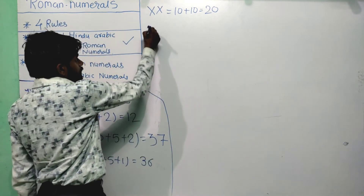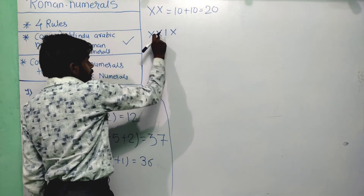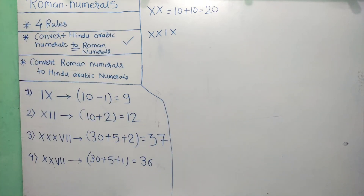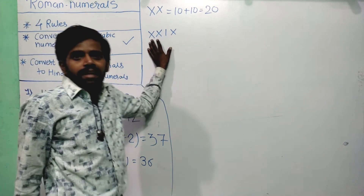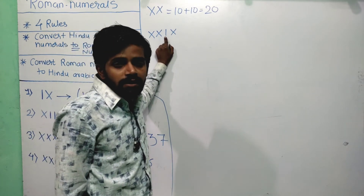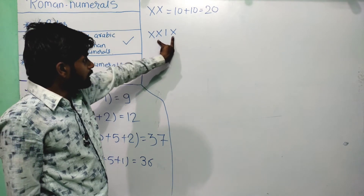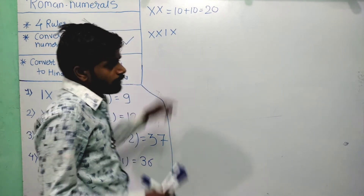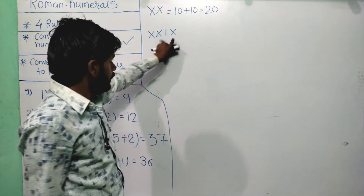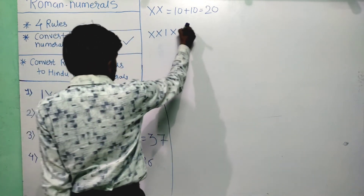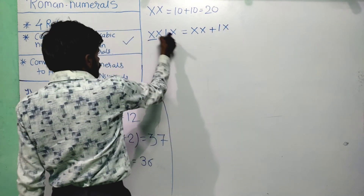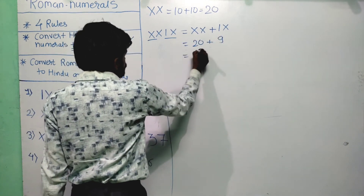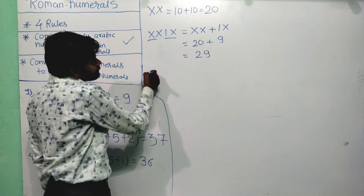XX: same symbol repeated twice, so add — 10 plus 10 equals 20. For XXIX: XX equals 20. The I is placed between two greater numerals X and X. Apply the fourth rule — take I with the right-hand X: IX equals 9. So XXIX equals 20 plus 9 equals 29.